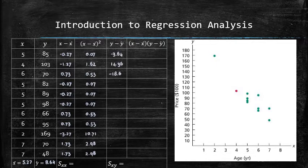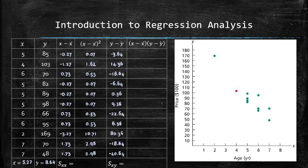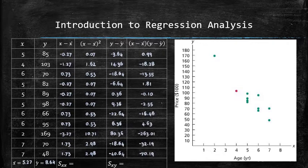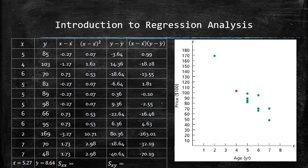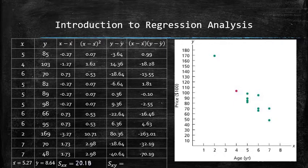We subtract y bar from each value of y to fill out the fifth column and then multiply each entry by the corresponding entry from the third column to get the sixth column. We add the values in the fourth column to get S_xx. We add the values in the sixth column to get S_xy.